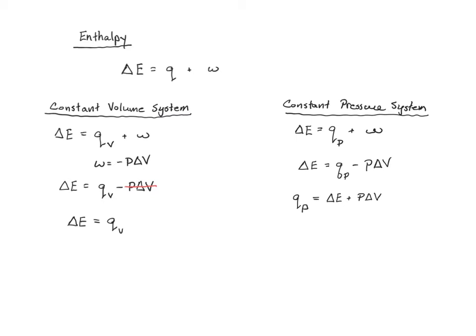If you remember back where we talked about state functions, a state function is a value that only depends upon the beginning and the ending points — the way that you get from beginning to end doesn't matter. Things like volume and temperature are state functions, whereas things like heat and work are path-related. But this is a special case: here we have heat that completely depends upon state functions. The value we're going to use to describe this is delta H, which is what we call enthalpy.